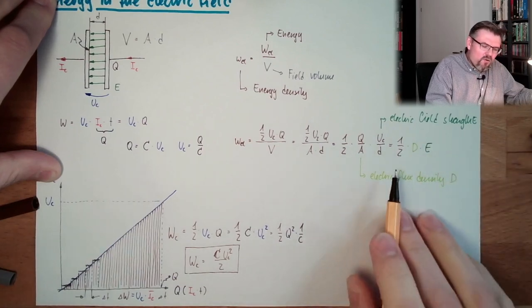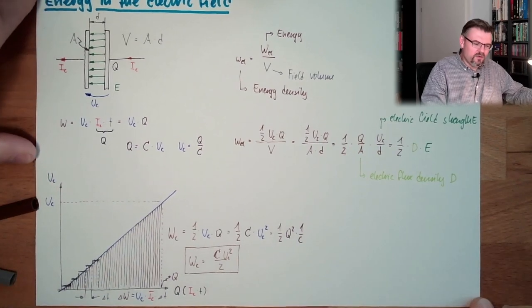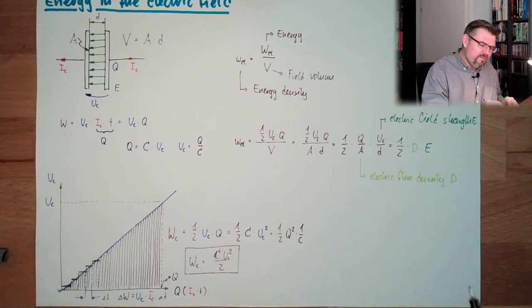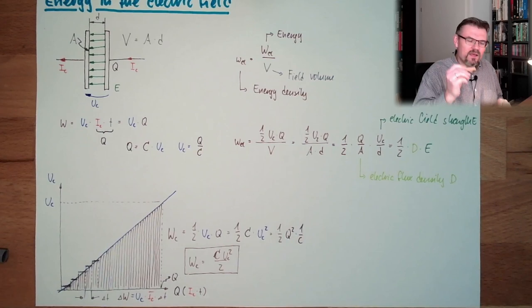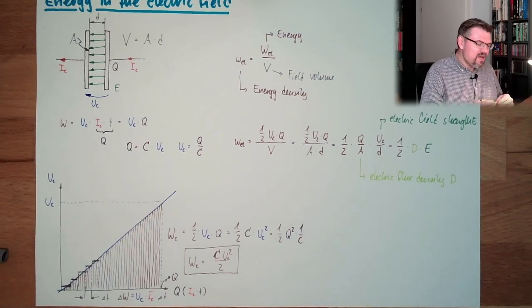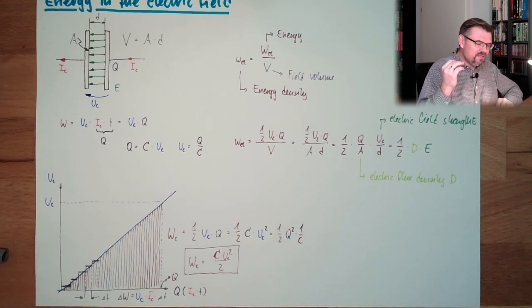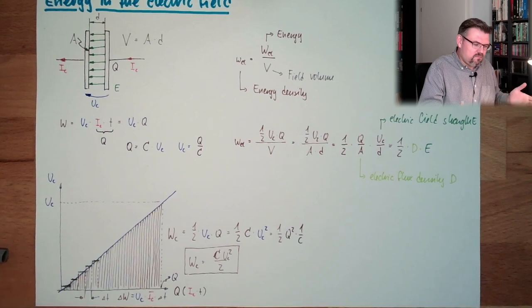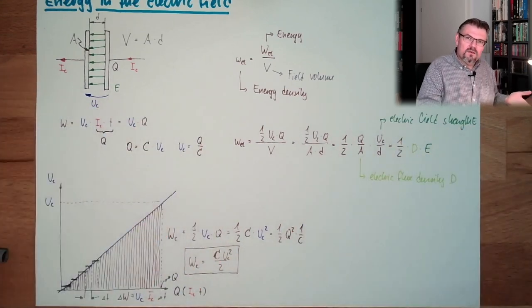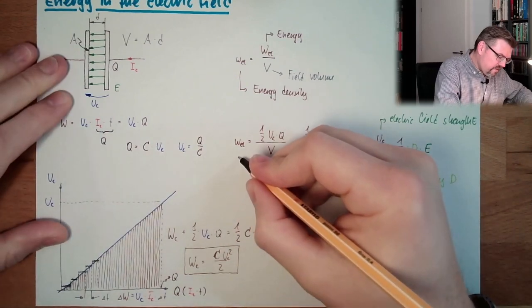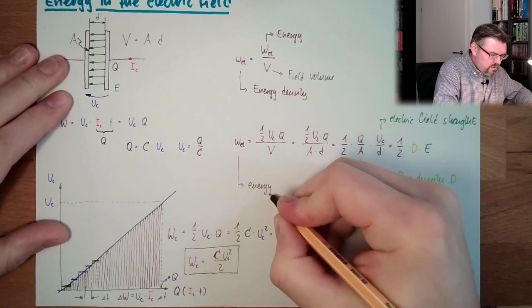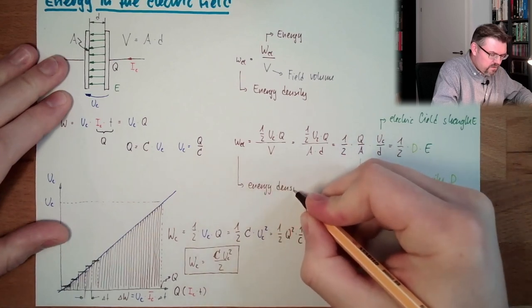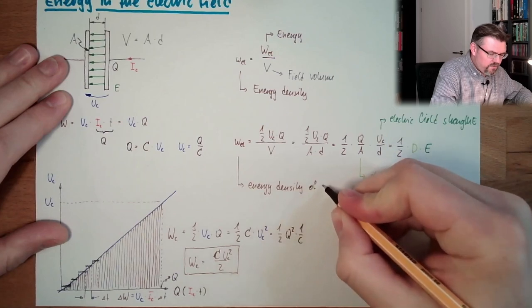Now there are only field units. There are only field units. There is the electric flux density, there is the electric field strength, and nothing else. So that's another hint that it's really true that the energy is stored inside the electric field. That's it. So this is the energy density of the electric field.